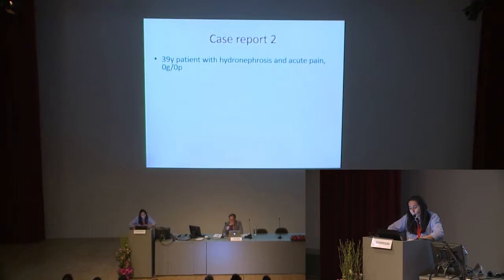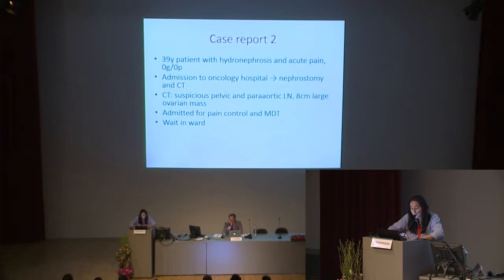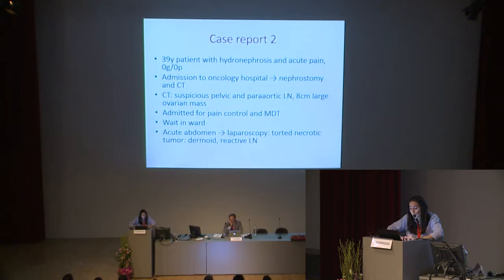The second case: a 39-year-old with a strong childbearing wish, admitted to an oncology hospital because of hydronephrosis and a pelvic mass with high suspicion of ovarian cancer. She received a nephrostomy and a CT which showed suspicious pelvic and para-aortic infrarenal lymph nodes and a large ovarian mass. She was admitted for pain control and stabilization. MDT was ongoing when she developed an acute abdomen one evening. Emergency laparoscopy revealed a torted, necrotic tumor — a dermoid in the final histology — with only reactive lymph nodes on sampling. Where cancer was suspected, it actually wasn't.